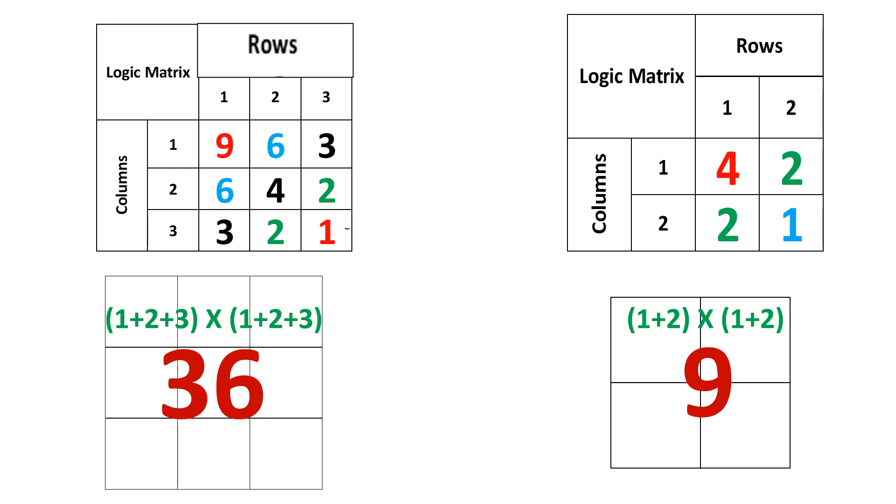This is 1, 2, and 3, answer is 36. This is 1 and 2, answer is 9. So basically it is 1 plus 2 plus 3 and then 1 plus 2 plus 3, and it is multiplied together. The same way, 1 plus 2 multiplied together. That is 3 into 3 equals 9. Amazing.